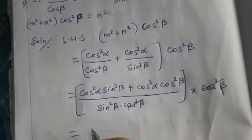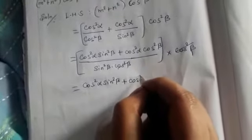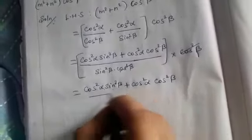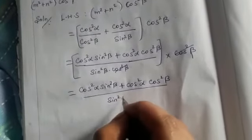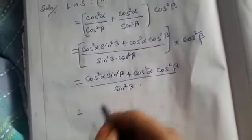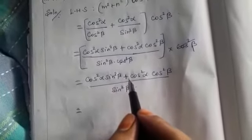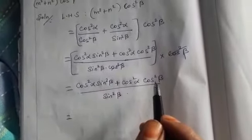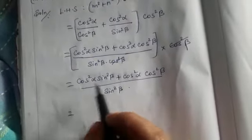After cancellation, the remaining expression becomes (cos²α · sin²β + cos²α · cos²β) divided by sin²β. Now looking at the numerator, we have cos²α · sin²β + cos²α · cos²β.